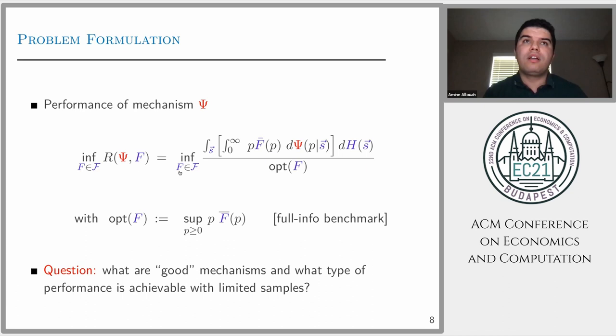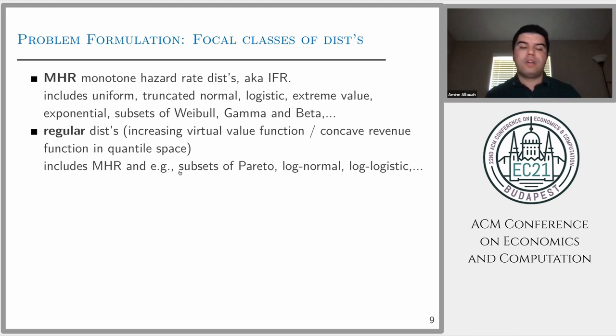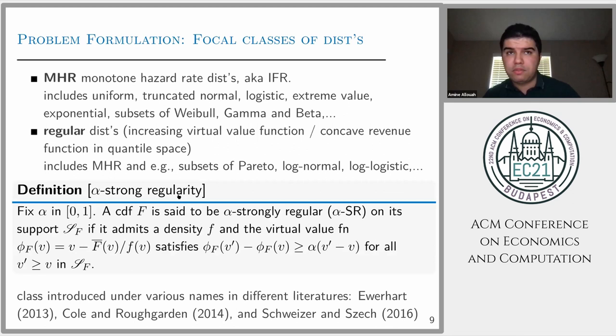Let's define this class of distributions. We'll be focusing on a fairly general class widely assumed in the literature. One is the monotone hazard rate class of distributions that has an increasing failure rate. This includes many distributions like uniform, truncated normal, logistic, exponential, and others. We'll also look at the regular class of distribution, meaning those that have an increasing virtual value function, which includes the MHR class but also includes more parametric classes of distributions.